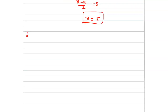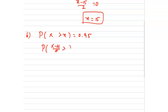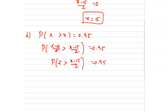Now come to the second part. In the second part we have to find p of x greater than x equal to 0.95. This implies p of (x minus mu) divided by sigma greater than (x minus 15) divided by 2 equals 0.95. So p of z greater than (x minus 15) divided by 2 equals 0.95.